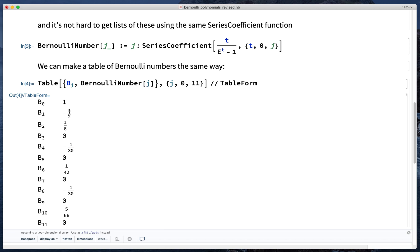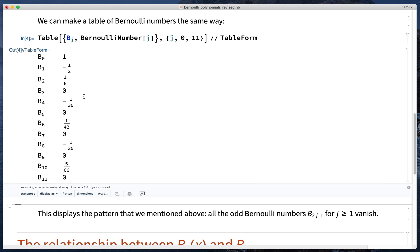B_0 is 1, B_1 is minus a half, B_2 is a sixth, and we notice that the odd Bernoulli numbers, at least the odd ones 3 and above, all vanish.